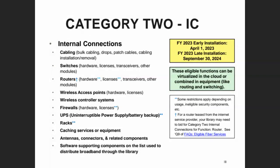For battery backups and racks, the eligibility depends on the equipment stored in the rack or supported by the UPS. For example, if you've got a UPS backing up your switches, firewall appliance, and access points, that UPS is probably 100% eligible. But if you also have a server connected to the battery backup, then that UPS would be only partially eligible. Similar concept with the rack — if the server is stored in it alongside eligible equipment, you have to only request discounts on the portion supporting E-Rate eligible things.